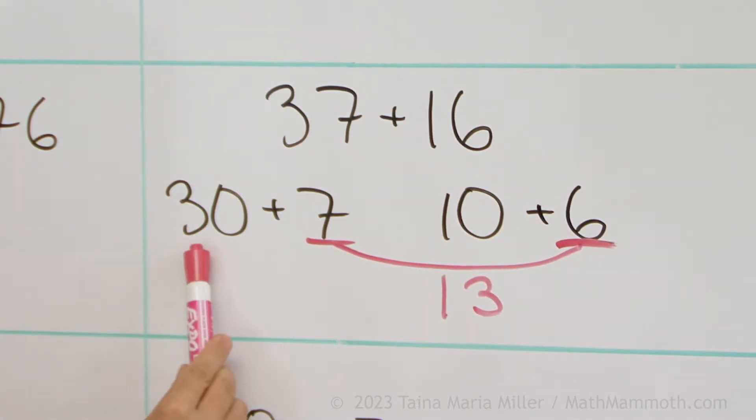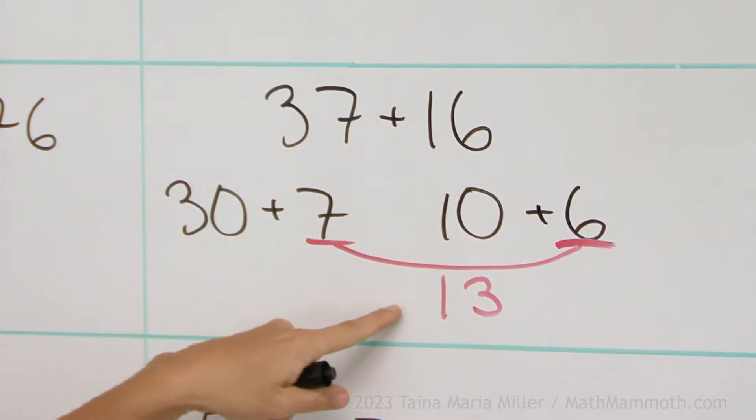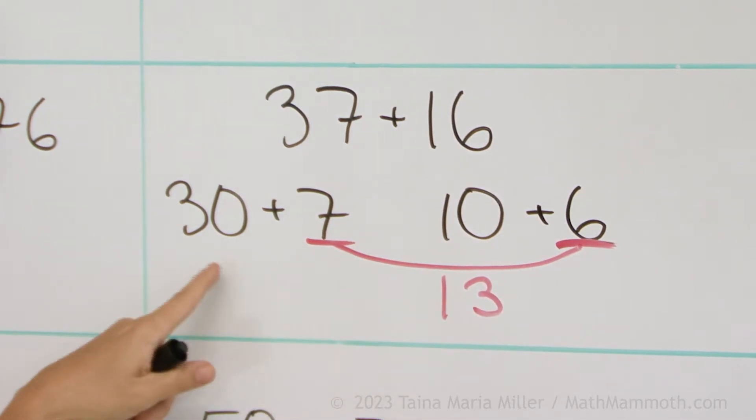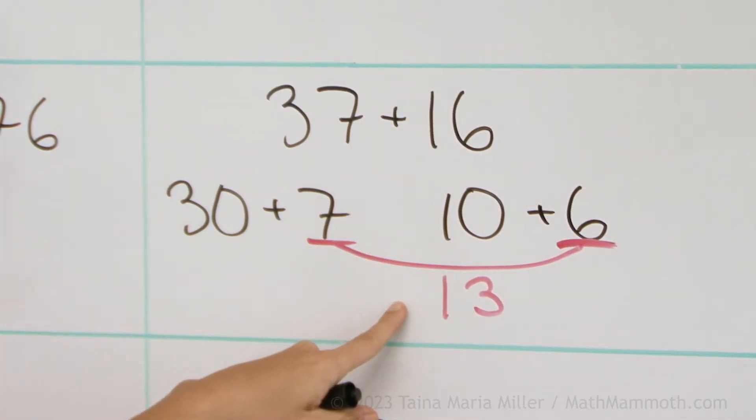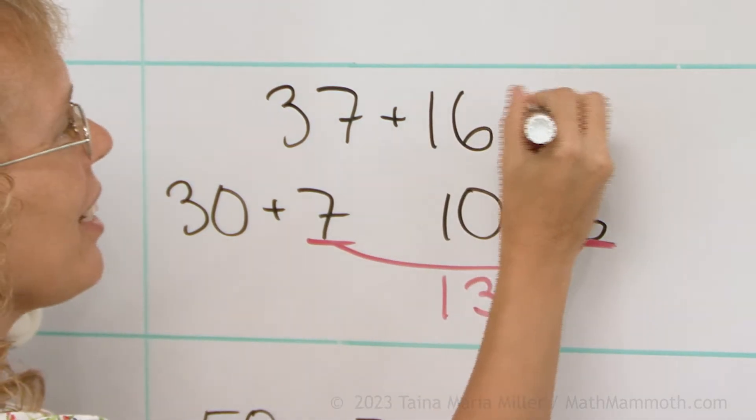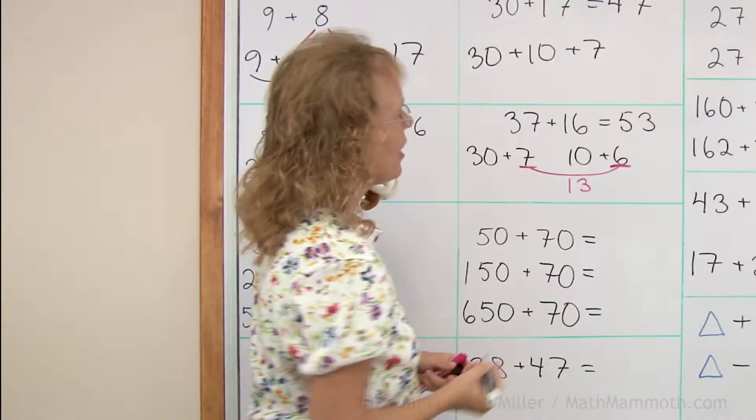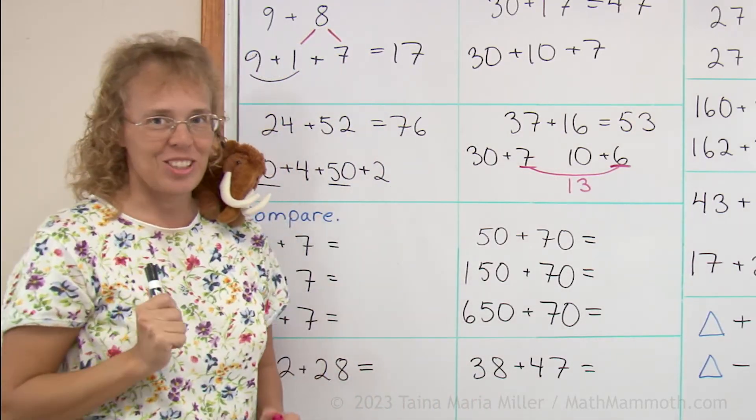So in total I have 30 and 10. Then this one is also 10 and 3. 30 and 10 and 10 and then 3. So what do we get? Should be 53. So that is one of our ideas for mental addition.